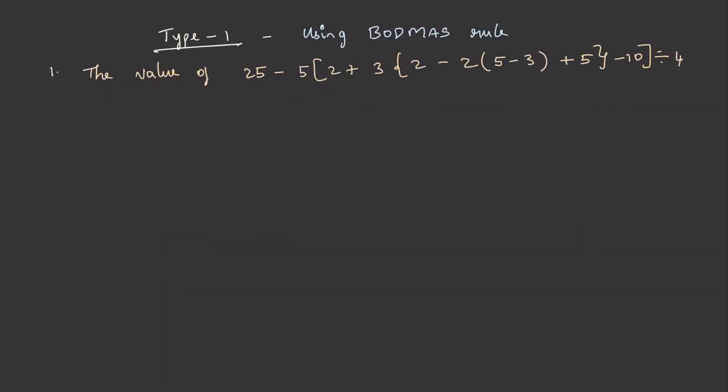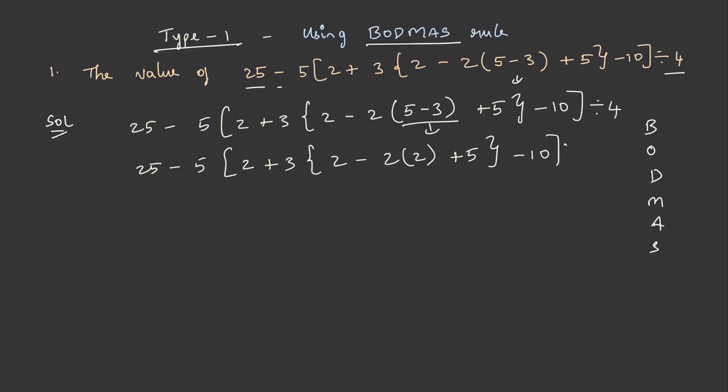Type 1. Let's solve problems using BODMAS rule. The value of 25 minus 5 into 2 plus 3 into 2 minus 2 into 5 minus 3 plus 5 minus 10 divided by 4. According to BODMAS rule, firstly we need to remove the brackets and the order continues like this way, B, O, D division, multiplication, addition and subtraction. So let's solve this question. Our first step is to solve this bracket, and this becomes 25 minus 5 into 2 plus 3 to 2 minus 2 into 2 plus 5 minus 10 divided by 4.